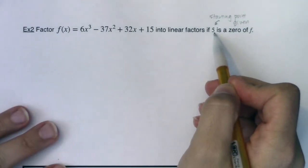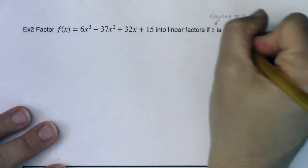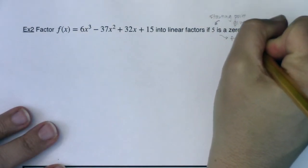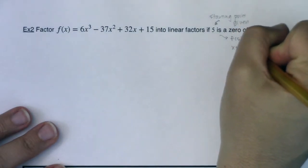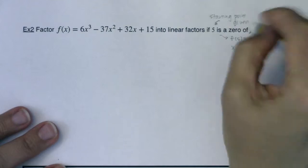If 5 is a zero, I know a couple of things. If 5 is a zero, from that factor theorem on the other page, you know f(5) is equal to 0, and you also know that x minus 5 is a factor.